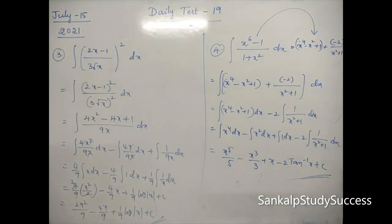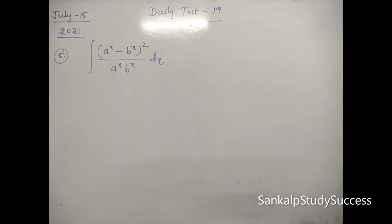Remember the format: quotient plus remainder divided by divisor. Please note this — it is very important. Now look at the fifth question — a very logical question.